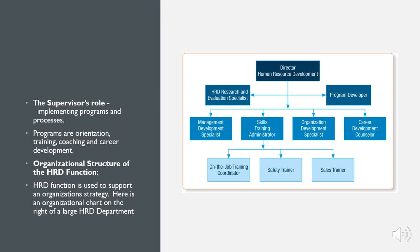The organizational structure of the HRD function is used to support an organization's strategy. Looking at an organizational chart of a large HRD department, at the very top is the Director of Human Resources Development. Below that are HRD research and evaluation specialists and program developers. Then management and development specialists, skills training administrators, organization development specialists, and career development counselors. Further down are on-the-job training coordinators, safety trainers, and sales trainers.